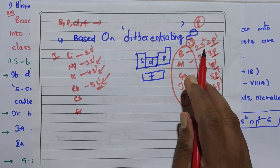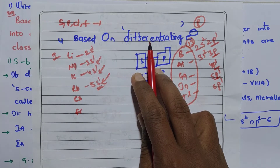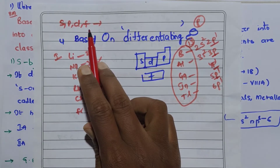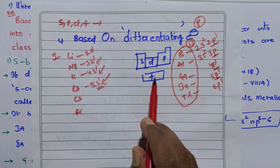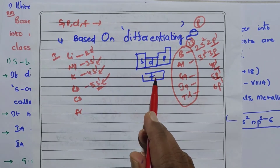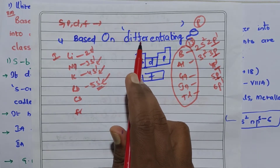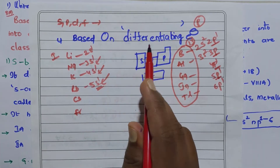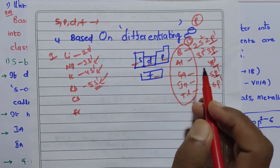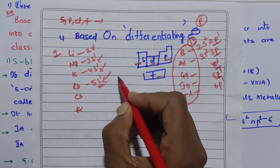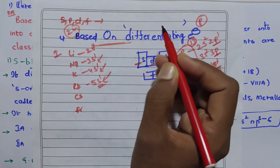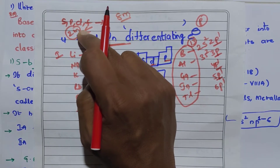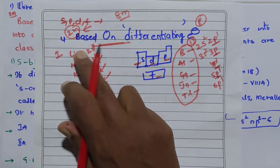So the last electron is called the differentiating electron. If any element has its last electron in the f orbital, it is placed in the f block — that means the f orbital holds the last electron in f block. So based on the differentiating electron, there are 4 blocks.